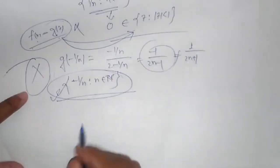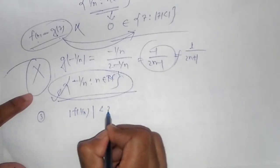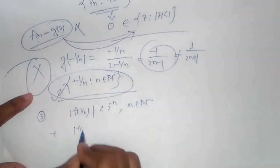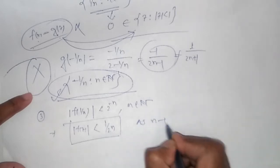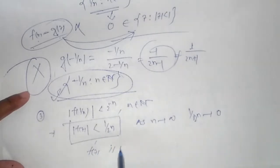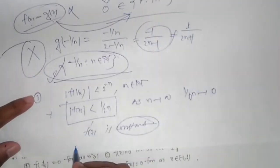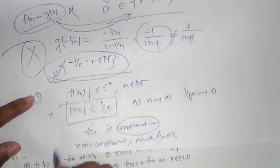Option 3: |f(1/n)| < 2^(-n) for n ∈ ℕ. We can see that as n tends to infinity, 1/2^n tends to zero, so from this we can say that f(z) is a constant function. But in the question, f is given to be a non-constant analytic function, so option 3 is also not true.